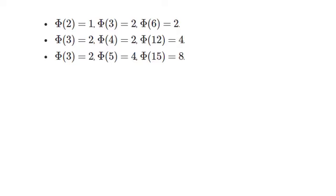Very good. As another example, 18 is 2 times 9, and phi of 18 is equal to phi of 2 times phi of 9.